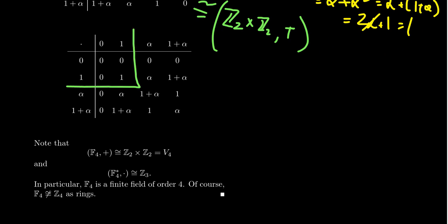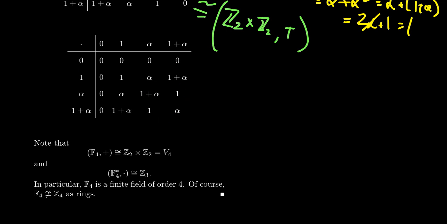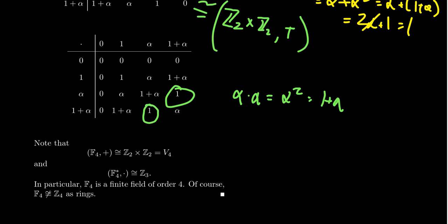Multiplication is where things get really interesting. The {0,1} part looks just like multiplication in Z2, and 1 acts as the multiplicative identity: 1·α = α, and 1·(1+α) = 1+α. Multiplication is commutative. The key case: α·α = α² = 1+α, by the relation we derived earlier.